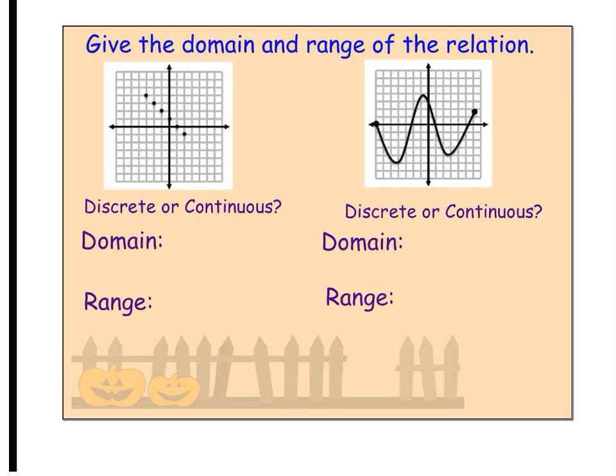So, we are just jumping into examples right away. So, there's two things, actually three things to identify for each graph that we're going to talk about. The first is whether it's discrete or continuous and then we're also going to find the domain and range. So, you guys are going to notice that we write the domain and range differently depending on what type of graph it is.